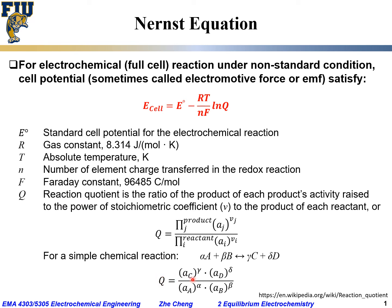For this reaction, the reaction quotient Q has in the numerator the activity of product C raised to the power γ, times the activity of product D raised to the power δ. In the denominator, the activity of reactant A raised to the power α, times the activity of reactant B raised to the power β.